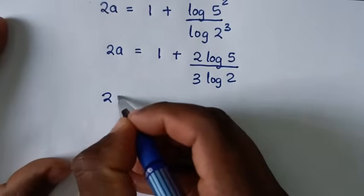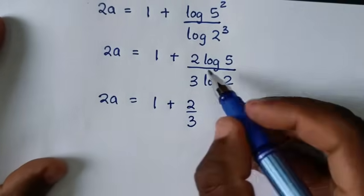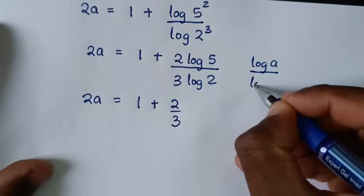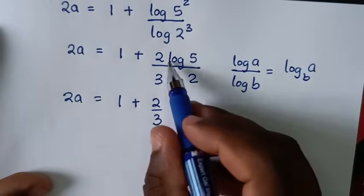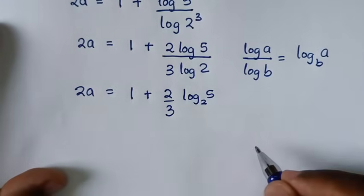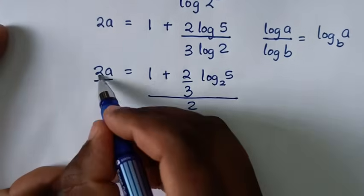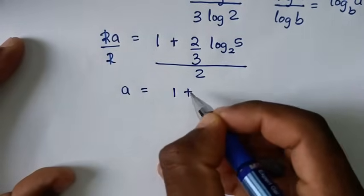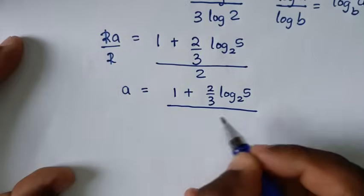Then it will be 2a is equal to 1 plus 2 over 3 times log of 5 over log of 2. Since log of 5 over log of 2 is in the change of base form, it equals log base 2 of 5. So 2a is equal to 1 plus 2 over 3 log base 2 of 5. To find a, we divide both sides by 2, so a is equal to 1 plus 2 over 3 log base 2 of 5, all over 2.